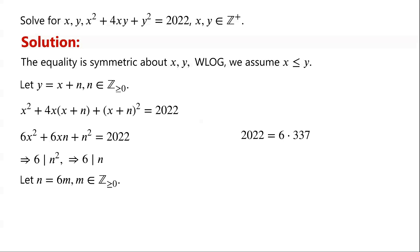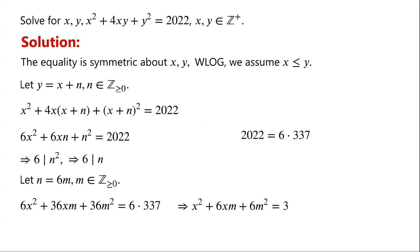Substituting n equal 6m in the equation, we have 6x squared plus 36xm plus 36m squared equals 6 times 337. Dividing the equation by 6, we get x squared plus 6xm plus 6m squared equals 337.